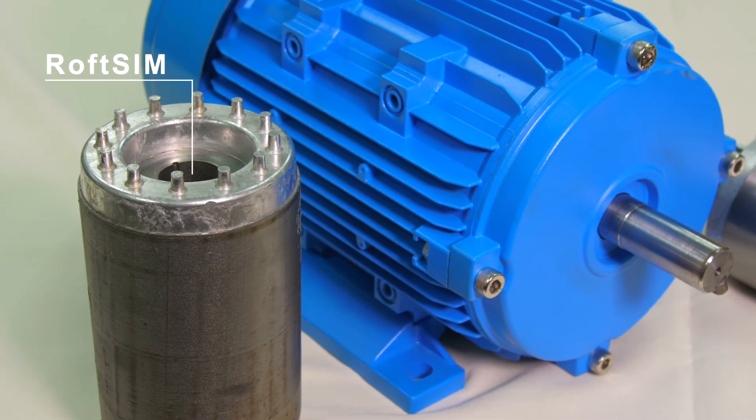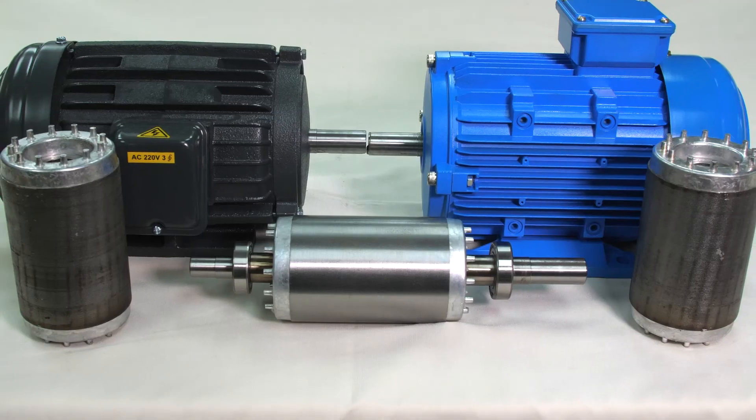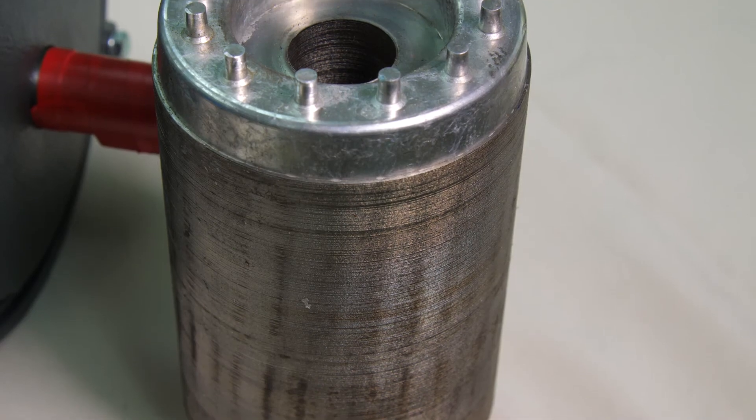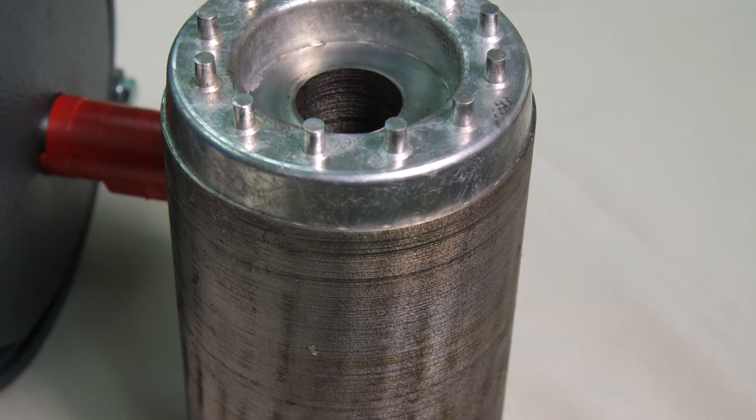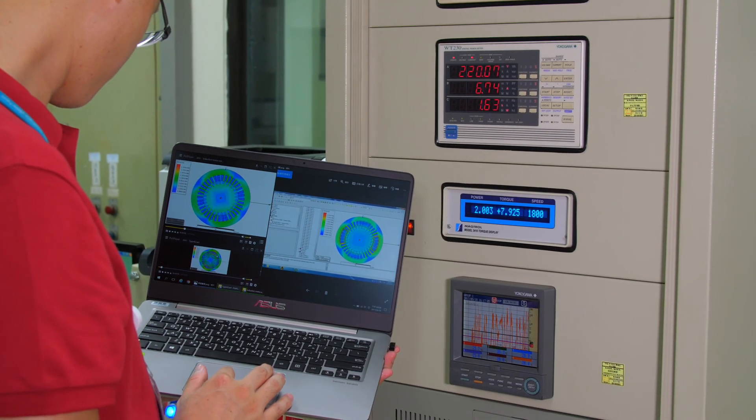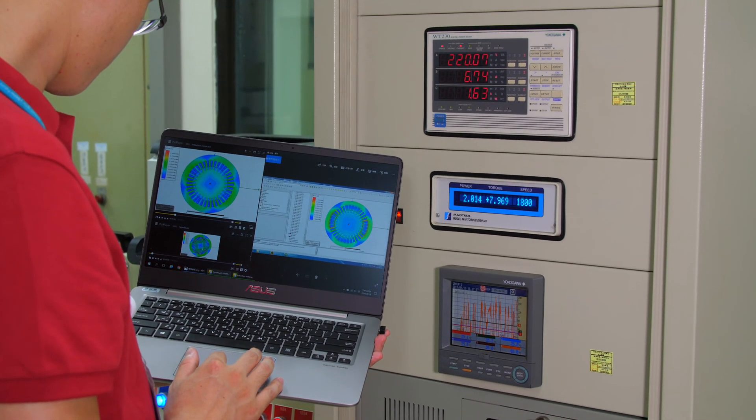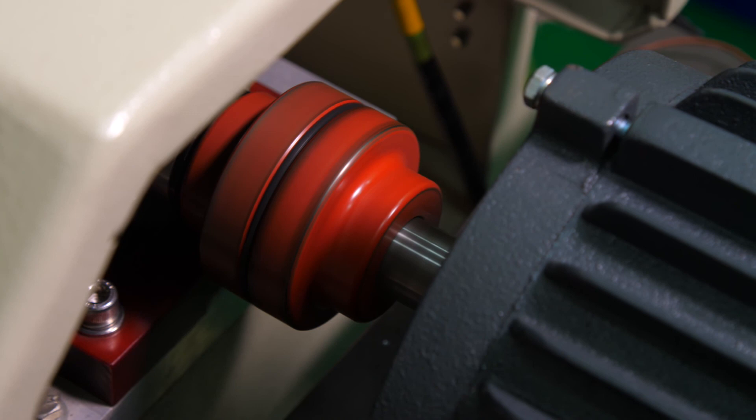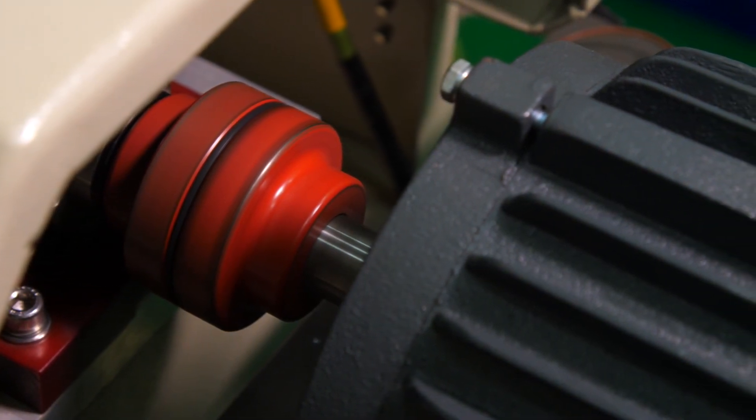RofSIM technology developed by eTree is based on a traditional induction motor whose rotor steel has been modified in structure to allow the rotation speed of the rotor to synchronize with the frequency of the motor's input current. In this way, the operating efficiency of the motor is greatly improved.